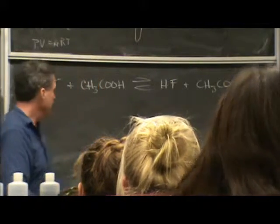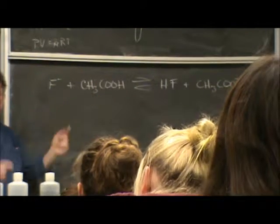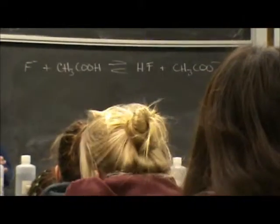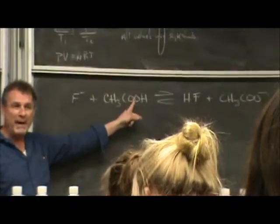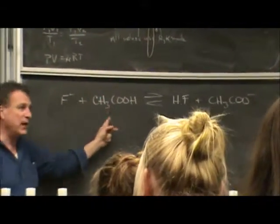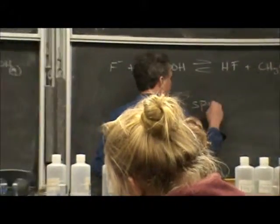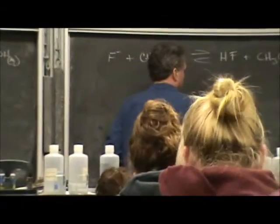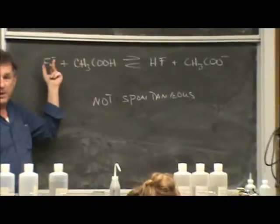Bottom line is, if I take a solution of acetic acid and add it to a solution that contains fluoride ions, not a lot happens. Right? Because the stronger base already has the hydrogen ion. So we would say this reaction is not spontaneous. What about the one out of ten times that it did? One out of ten times, which is why we end up with some of these, but not for a minute.